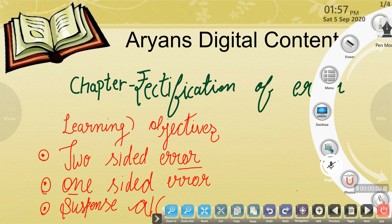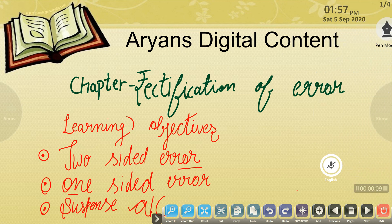Hello students, today we are going to start our next chapter, that is Rectification of Errors. In this chapter, we are going to discuss mainly three main topics: two-sided error, one-sided error, and suspense account.